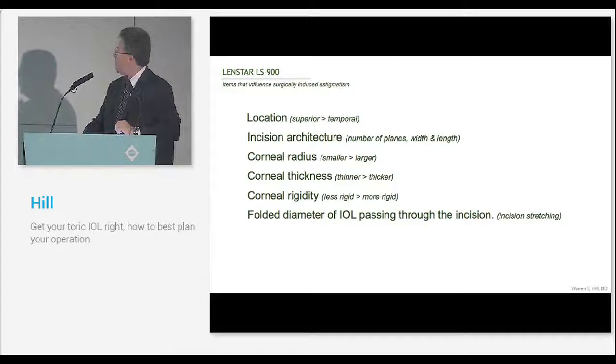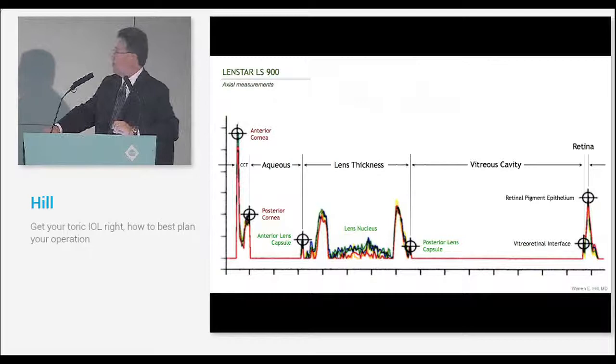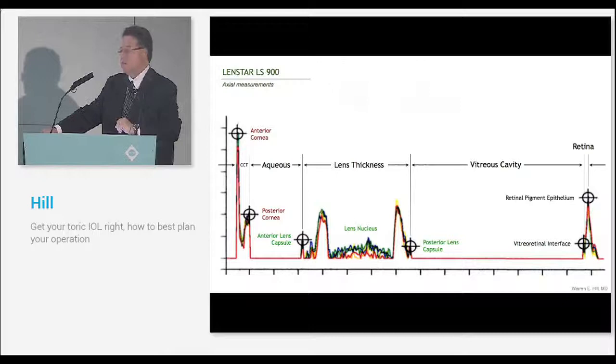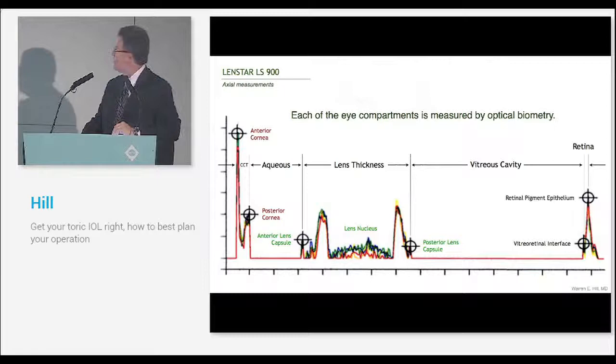Part of this talk is about getting things right for the toric IOL. I should also mention the axial measurements of the LenStar. Here we have the anterior cornea, posterior cornea, anterior lens, posterior lens, RPE, and the pigment epithelium. This is a magnificent way to measure the axial length. Each eye compartment is measured individually.